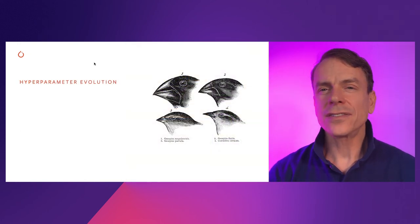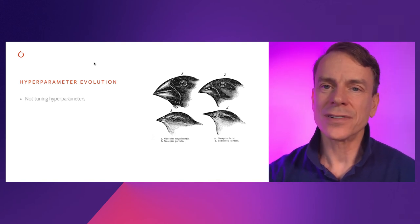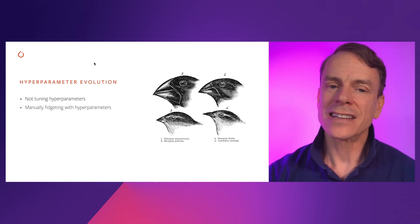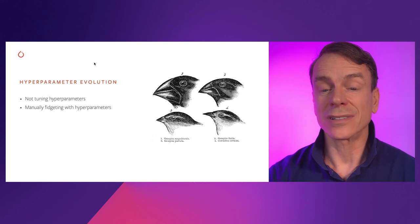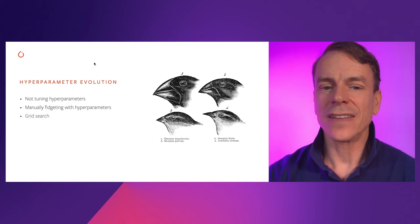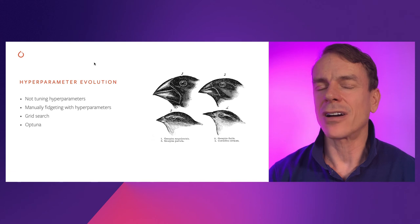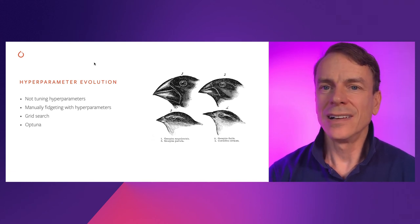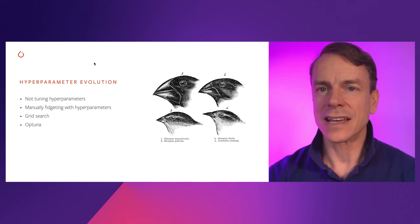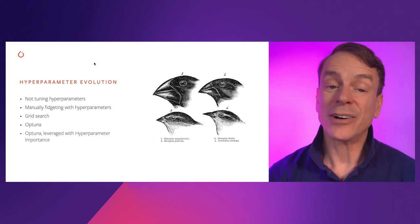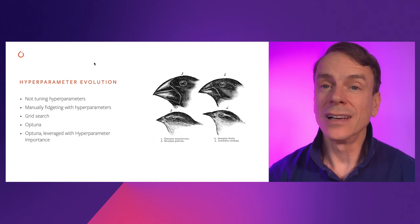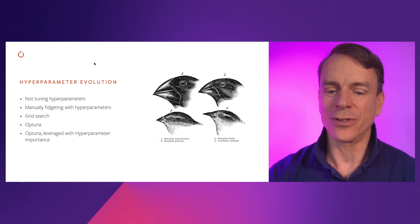So as you can see, there's kind of a hyperparameter evolution. I think the first step is just using sort of the default or not tuning the hyperparameters. And the next step is manually fidgeting with those hyperparameters to see which is the most important. Then after that, maybe using a grid search and then hopefully using a hyperparameter optimizer like Optuna to systematically, using Bayesian optimization, look for the best hyperparameters. And then finally, hopefully using Optuna leveraged with hyperparameter importance so that you limit it down to the hyperparameters which have the most impact on your overall performance.